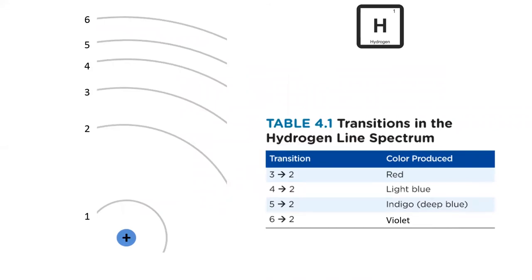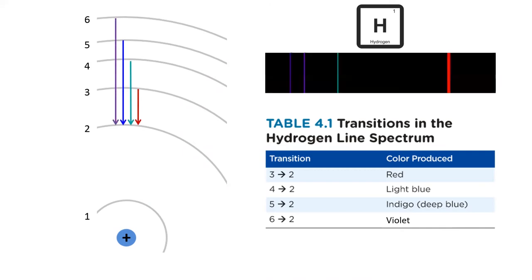While each element has its own emission spectrum, we'll keep it simple and only focus on hydrogen for now. When an excited electron in hydrogen falls to the second energy level, it emits a photon of visible light. There are four ways a photon can fall to the second energy level in hydrogen. Each corresponds to a different line in hydrogen's line spectrum.